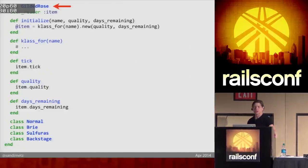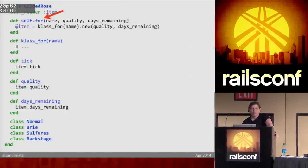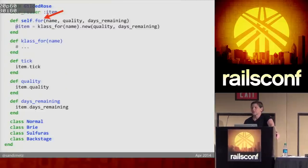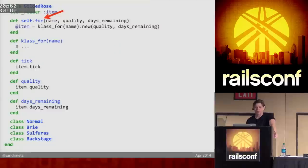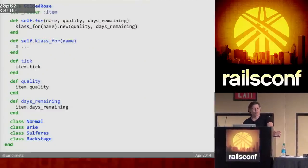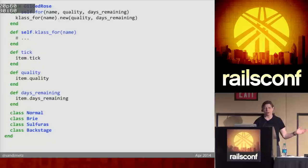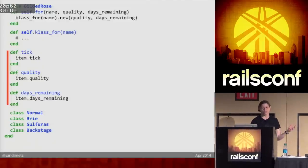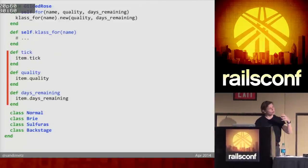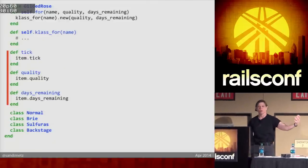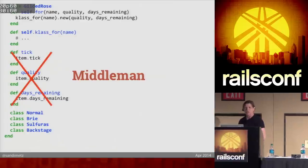I'm going to change this code to reflect the reality. I'm going to make Gilded Rose a module with a class method called 'for' — some people put 'new,' that's okay. I'm no longer keeping an instance of anything so I don't need an initializer. All these middleman messages now go away, since you're really going to talk to the item that you get back when you call 'for.' The way you use it is: send 'for' to Gilded Rose and it gives back an item, and it's the item you talk to.